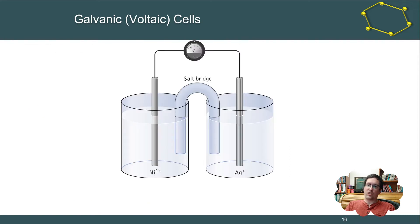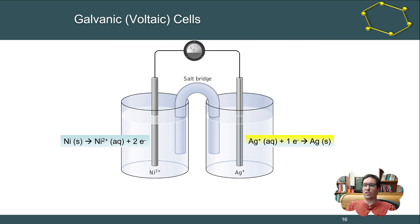Here is a galvanic cell. We have two pieces of metal: on the left side, pure nickel metal, and on the right side, pure silver metal. They're both sitting in baths of their own ions, with a voltmeter connecting them via a conductor wire, and a salt bridge in the middle to transfer ions. On the left side, solid nickel is becoming nickel ions and releasing two electrons — that's the oxidation side.